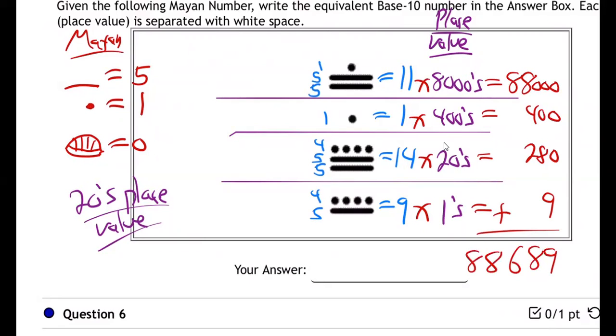88,689. And remember, you write in the answer just like that: 88689, no commas, no comma, no spaces.